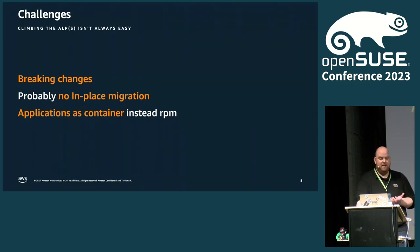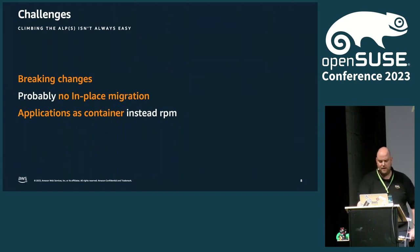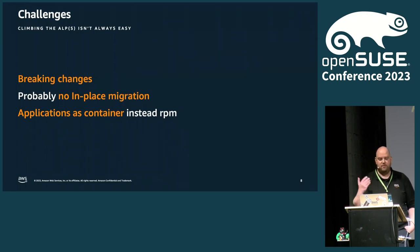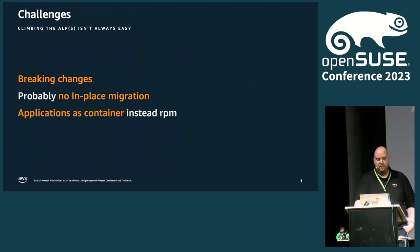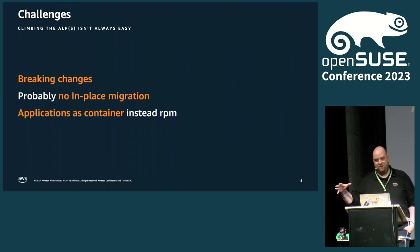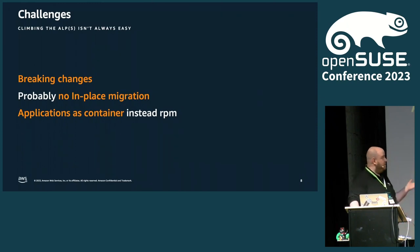That also means, in my impression, it's very unlikely that we will see an in-place upgrade path from LEAP to ALP. An example that comes to mind is BtrFS as the root file system — because it's required, it's mandatory. You need BtrFS as the root file system for ALP. And a lot of systems out there are using ext4 or XFS for their root systems.